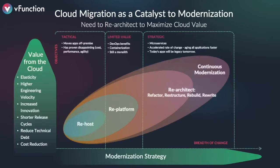Modernization involves a variety of approaches: re-hosting, re-platforming, re-architecting. The more you modernize, the more value you get from the cloud — elasticity, increased innovation, faster release cycles. Many people start with a tactical lift-and-shift approach, re-hosting or re-platforming their applications. Re-hosting moves applications off-premise and may close down data center facilities, but it doesn't tap into the full cloud value. Others move a monolith into a container and re-platform it, getting some DevOps and containerization benefits, but you're still dealing with a monolith.